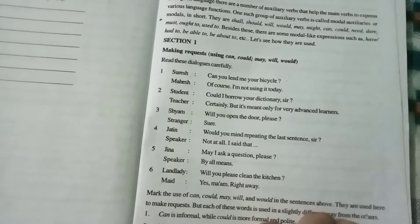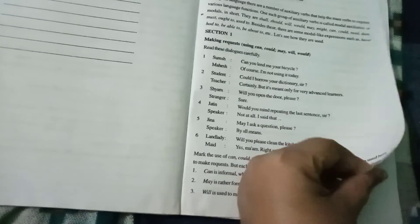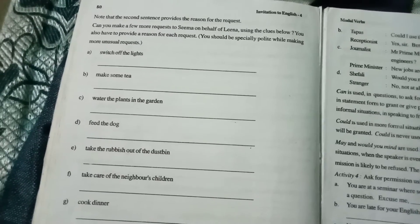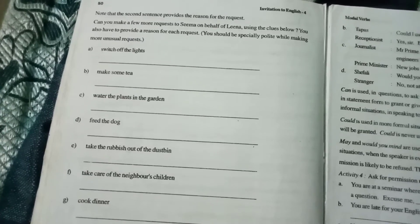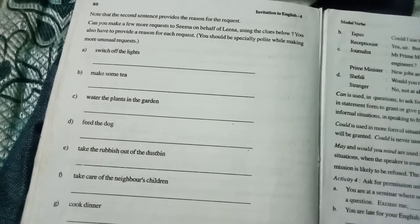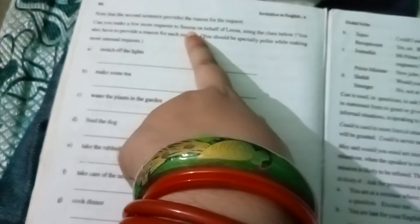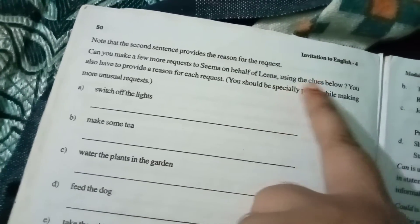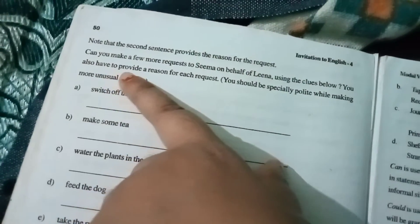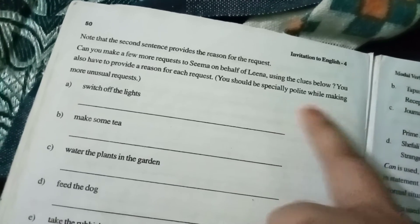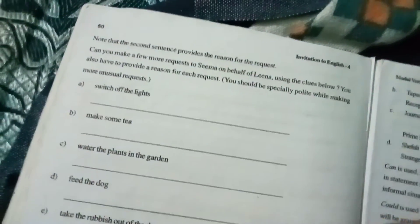Here in your activity the instruction is given here: Note that you can make a few more requests to Sima on behalf of Lena using the clues below. You also have to provide a reason for each request. You should be especially polite while making more unusual requests.